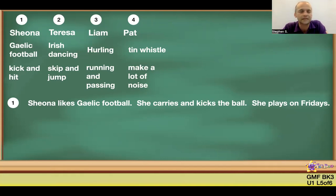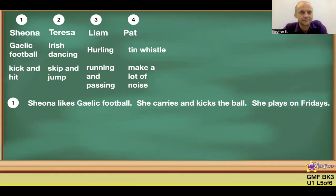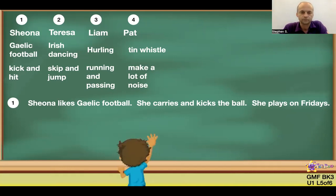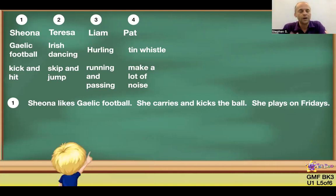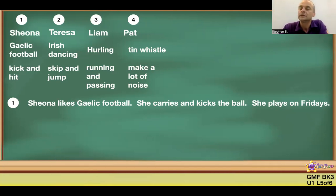It's present simple: 'She likes Gaelic football. She carries and kicks the ball. She plays on Fridays.' I've kept it simple as an example. You can make it trickier: 'Shona doesn't like Irish dancing. She doesn't skip and jump. She has Gaelic football on Fridays.' You can make the sentence in any fashion you want. Once you've provided the sentence pattern, ask individual students to come to the board — one for Teresa, one for Liam, one for Pat — rotating through as many kids as time allows.